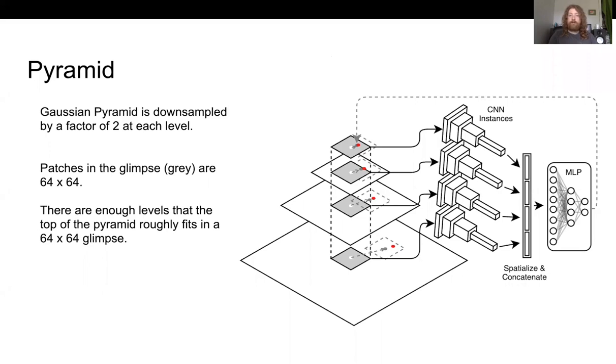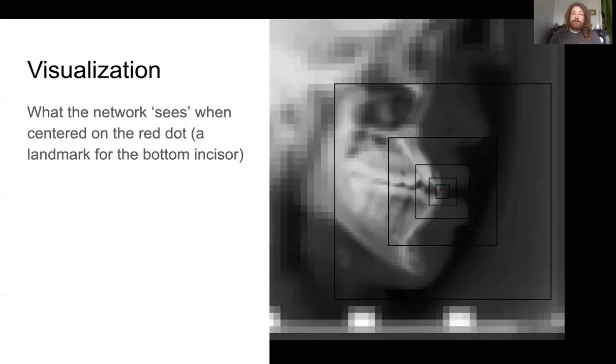Now we'll break down the individual pieces of this process. First is creation of the image pyramid - it's a Gaussian pyramid downsampled by a factor of two at each level. The patches are 64 by 64 pixels and there should be enough levels that the top level encapsulates basically the whole image. For a visualization of what this looks like to the CNN, you can see this figure. The red point is the lower incisor landmark. Near the landmark we have really high resolution, and as we sample further from the landmark location, there's lower and lower resolution as we step up levels in the pyramid.